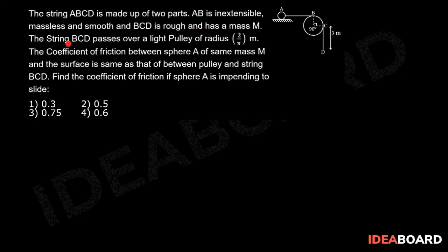The string BCD passes over a light pulley of radius 2 upon pi meters. The coefficient of friction between sphere A of same mass capital M and the surface is same as that between pulley and string BCD. Find the coefficient of friction if sphere A is impending to slide.